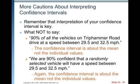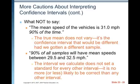Remember that interpretation of your confidence interval is key. You should not say '90% of all the vehicles on Trip Hamer Road drive at a speed between 29.5 and 32.5 miles per hour' — the confidence interval is always about the mean, not individual values. Do not say 'the mean speed of the vehicle is 31 miles per hour 90% of the time' — the true mean does not vary; it's the confidence interval that would be different had we gotten a different sample. And '90% of all samples will have mean speeds between 29.5 and 32.5 miles per hour' should not be said either.